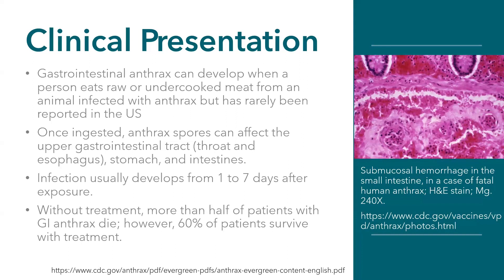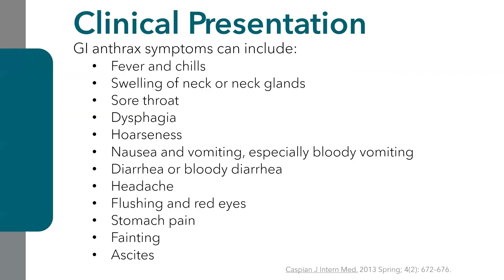Patients with GI anthrax can look quite sick with very nonspecific, flu-like symptoms: fever, chills, sore throat, swelling of lymph nodes, difficulty swallowing, nausea and vomiting. Blood is typically associated with nausea, vomiting, and diarrhea. Stomach pain and ascites are often prominent as well. A high index of suspicion is necessary to consider this diagnosis and treat it appropriately.